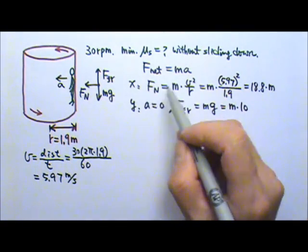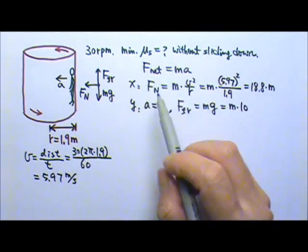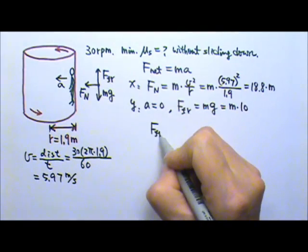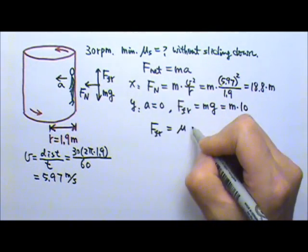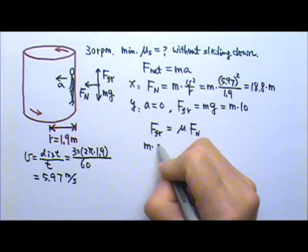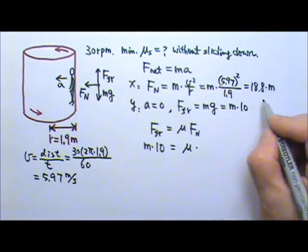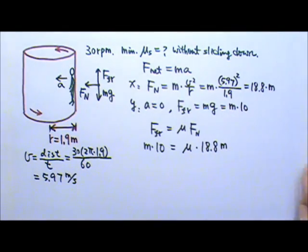And so now we have normal force in terms of M. Friction in terms of M. And we want to find the mu_S. So we use that only equation that has the mu_S. So that will be mu times the normal force equals to friction. Friction is M times 10. We don't know the mu. We're looking for mu.